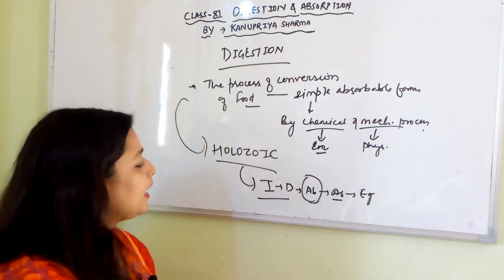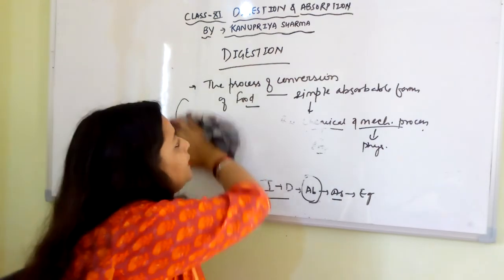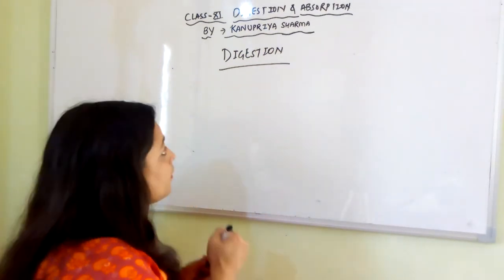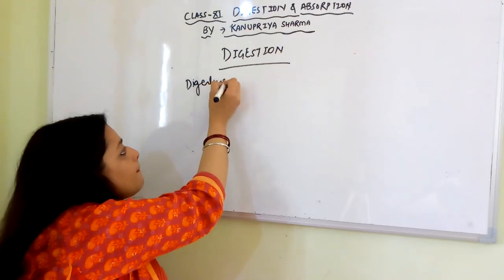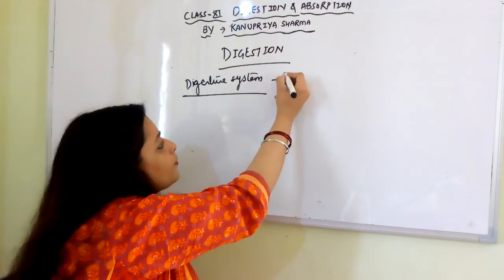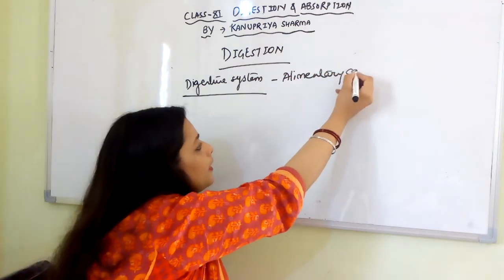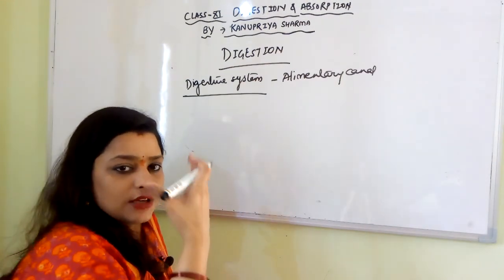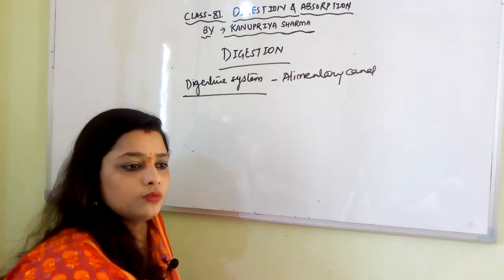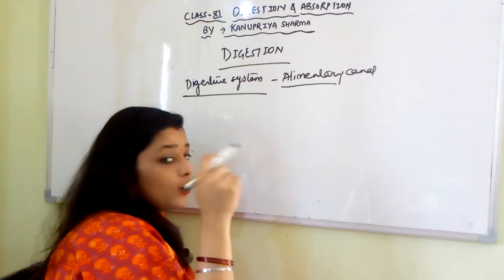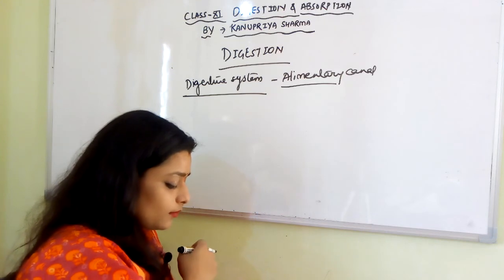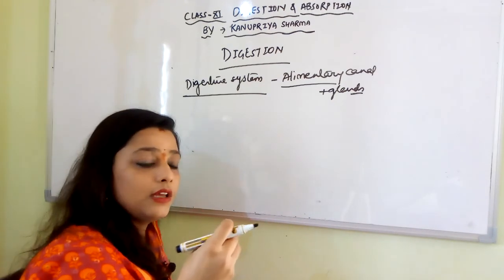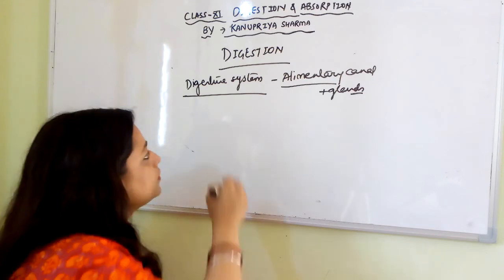For digestion we have a system known as the digestive system or human digestive system. It is composed of the alimentary canal — a tube which goes from ingestion to egestion — connected to many organs. Associated glands secrete the enzymes required at different stages for digestion of different parts of food.